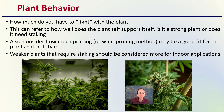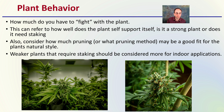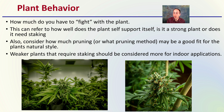Then we get to plant behavior — how easy is the plant to grow. This could refer to how well the plant supports itself, whether it's strong or requires staking. Also consider how much pruning or what pruning method might be a good fit for the plant's natural style. Weaker plants that require staking should be considered more for indoor applications compared to those growing outdoors or for growers wanting a more hands-off production approach.